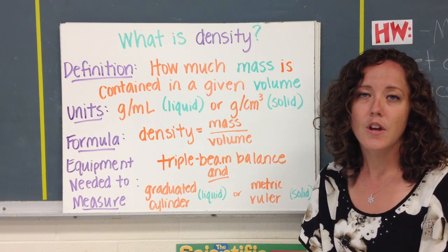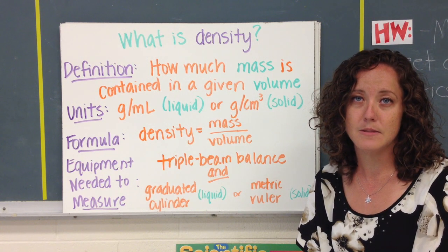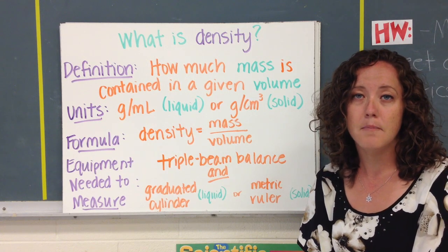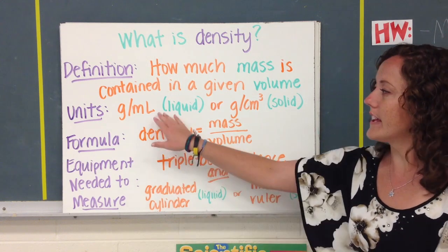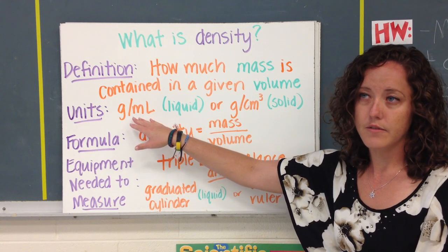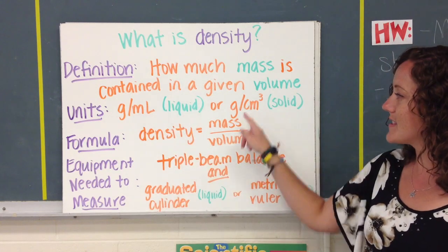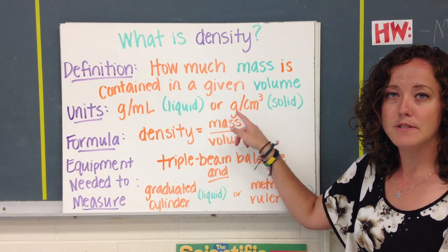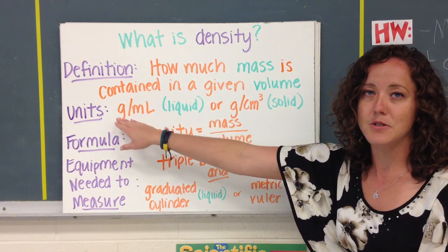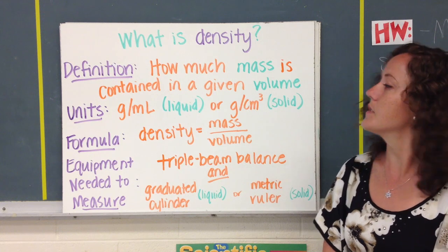Units that we use for density depend on the state of matter that it is. We talked about this before with liquids versus solids and the volume measurements that we find. So for liquid, density is measured in grams for every milliliter, and we would read this as grams per milliliter. And then if we have a solid, it would be used as grams per centimeter cubed. So you should recognize the mass measurement and the volume measurement in each one of these units.